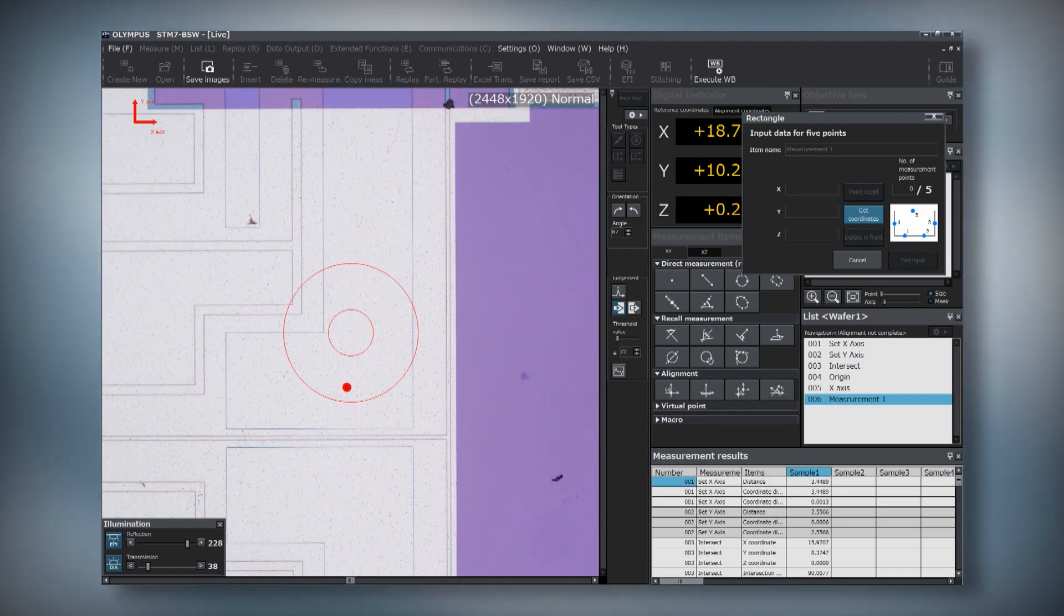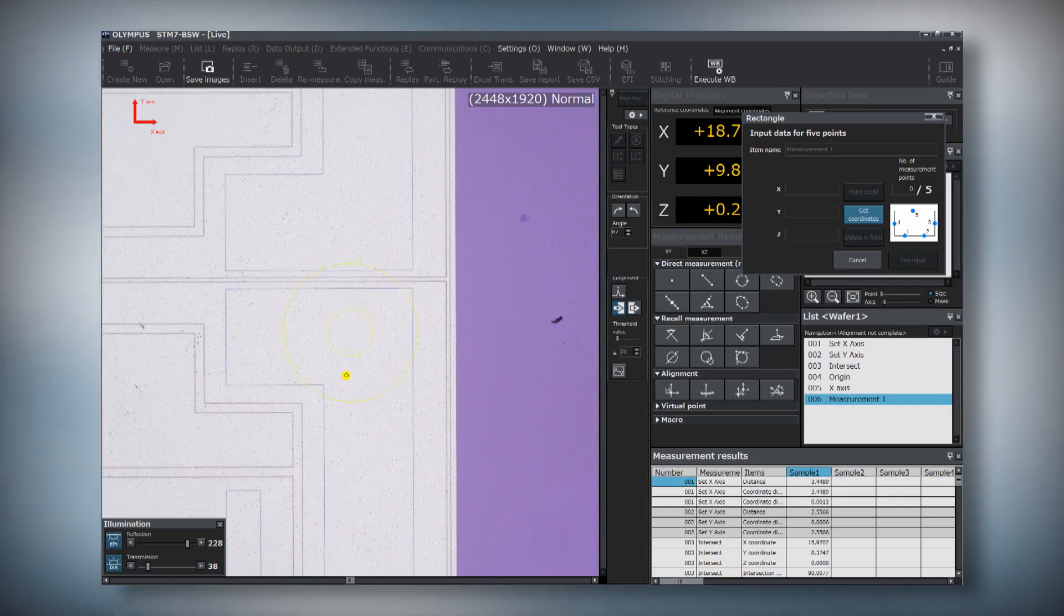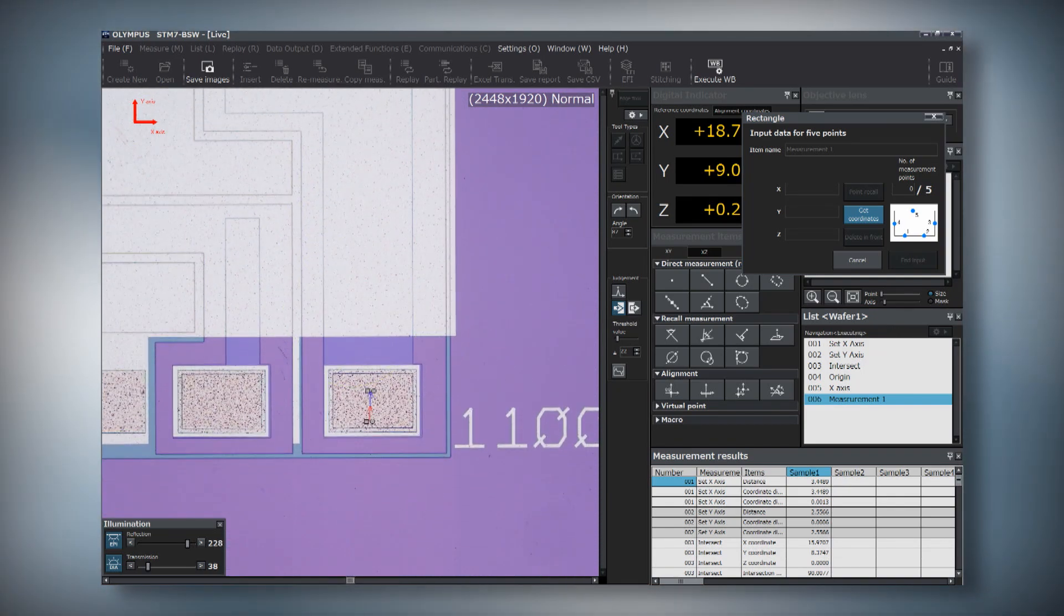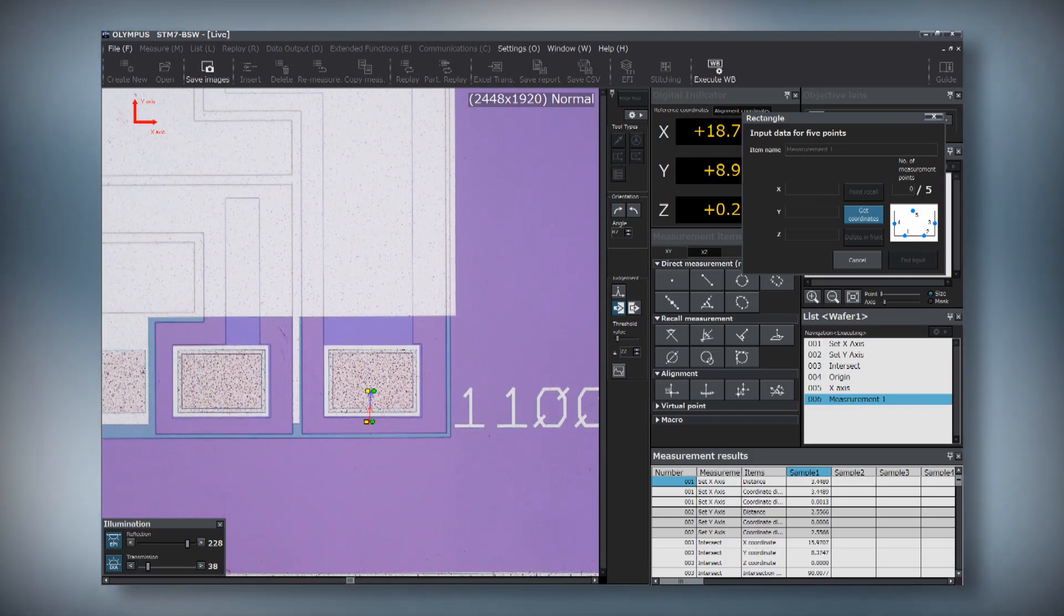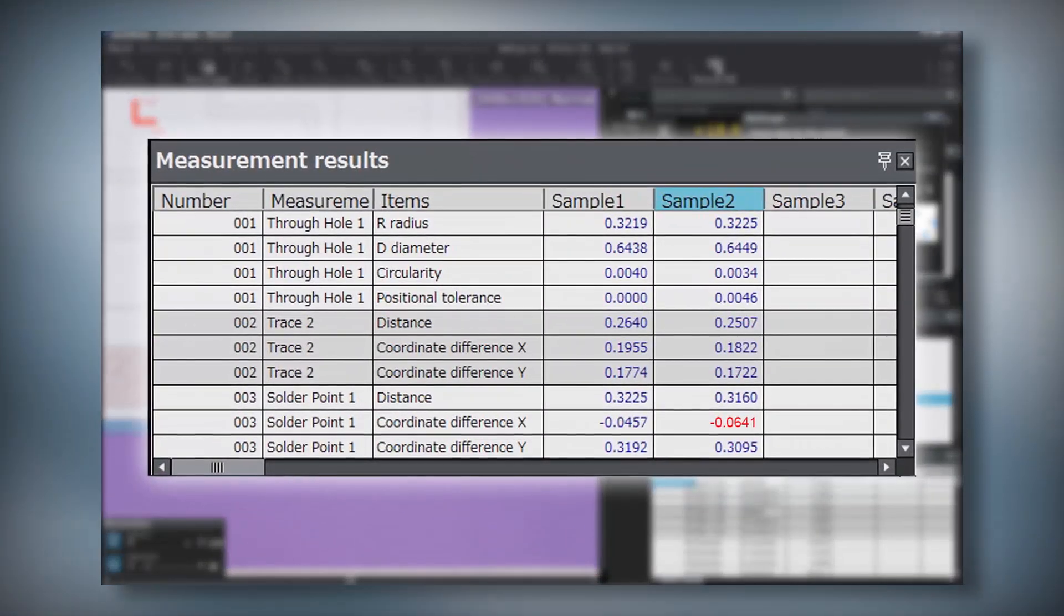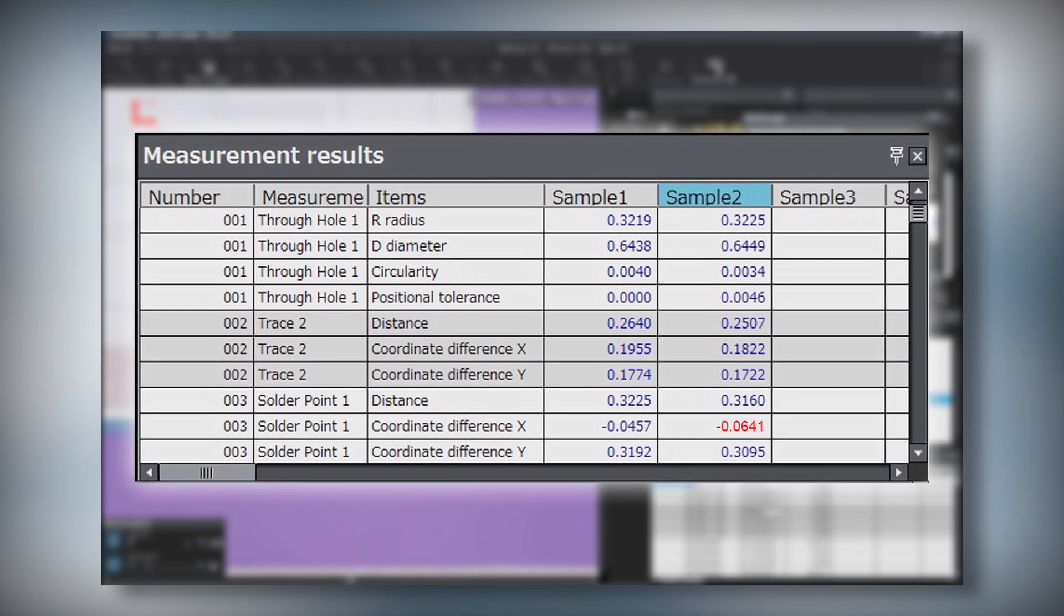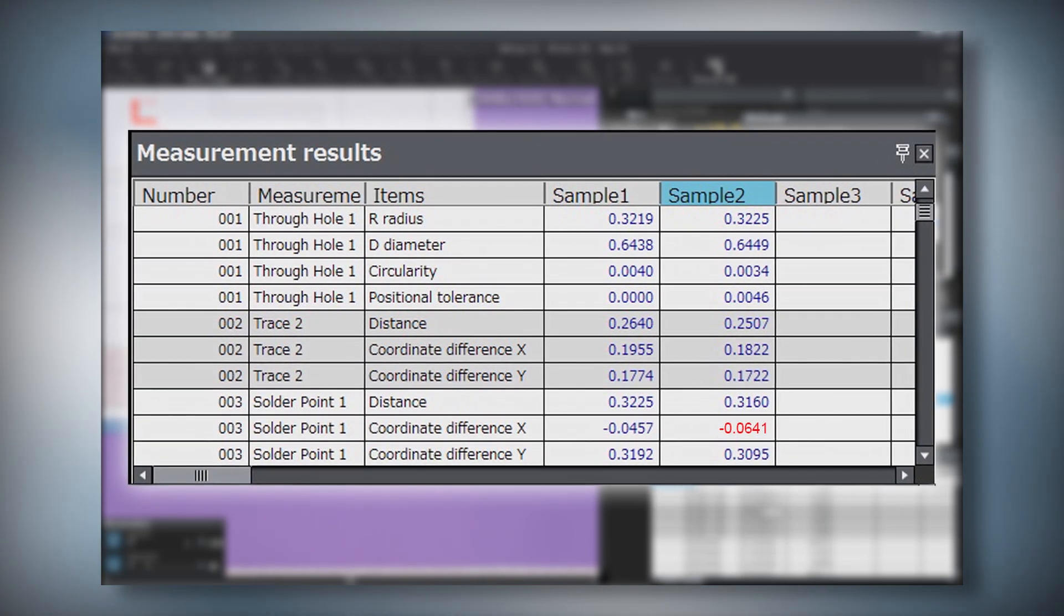The software guides users to each measurement point to ensure the correct measurements are taken. The software compares measurement results to known design tolerances and automatically displays any failure in red, so users know immediately if there is an issue.